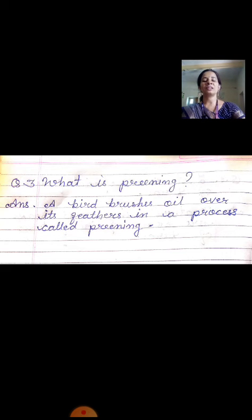The answer will be: a bird brushes oil over its feathers in a process called preening. Jo bird hote hain vo kya karte hain? Apne feathers ke upar jo oil hota hai usko brush karte hain. Isse kya hota hai? Inke feathers clean ho jaate hain. Is process ko — cleaning karne ki oil se — is process ko kya bolte hain? Preening. This is your third answer.